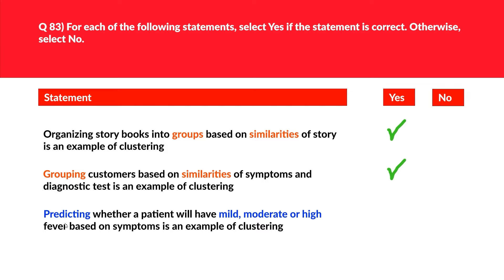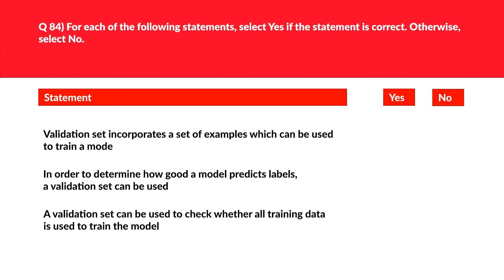Statement 3 says predicting whether a patient will have mild, moderate, or high fever based on symptoms is an example of clustering. This time we are grouping into two or more divisions and also predicting simultaneously. Whenever we group into divisions and predict at the same time, we need classification, not clustering. So the answer is no, and we log this as the correct answer.